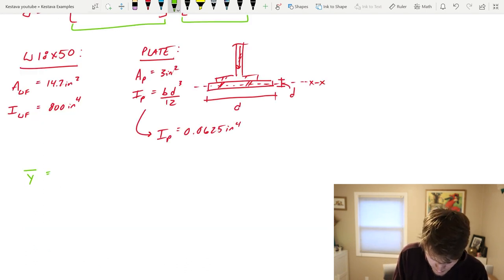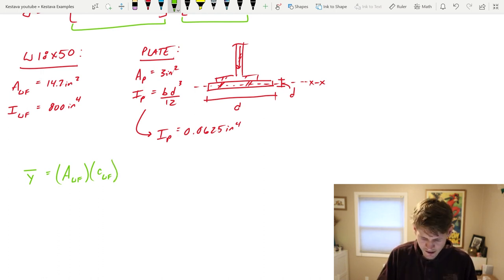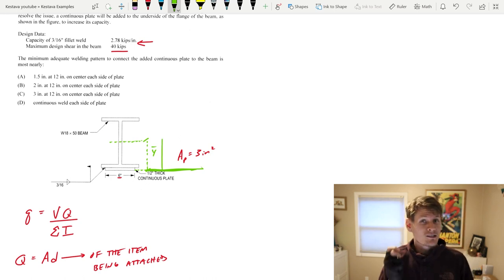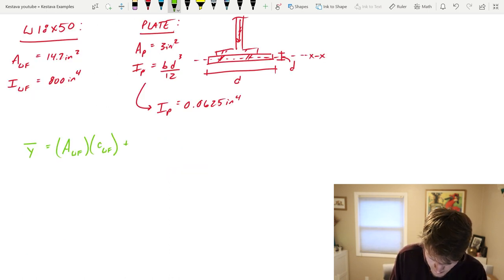Y bar is equal to area of the wide flange times, I'll call it c wide flange. And that is the distance from the axis that you're looking at, this green line right here, up to the centroid of your object, the centroid of the wide flange. And then the other one would be the centroid of just your plate, plus area of your plate times c plate.